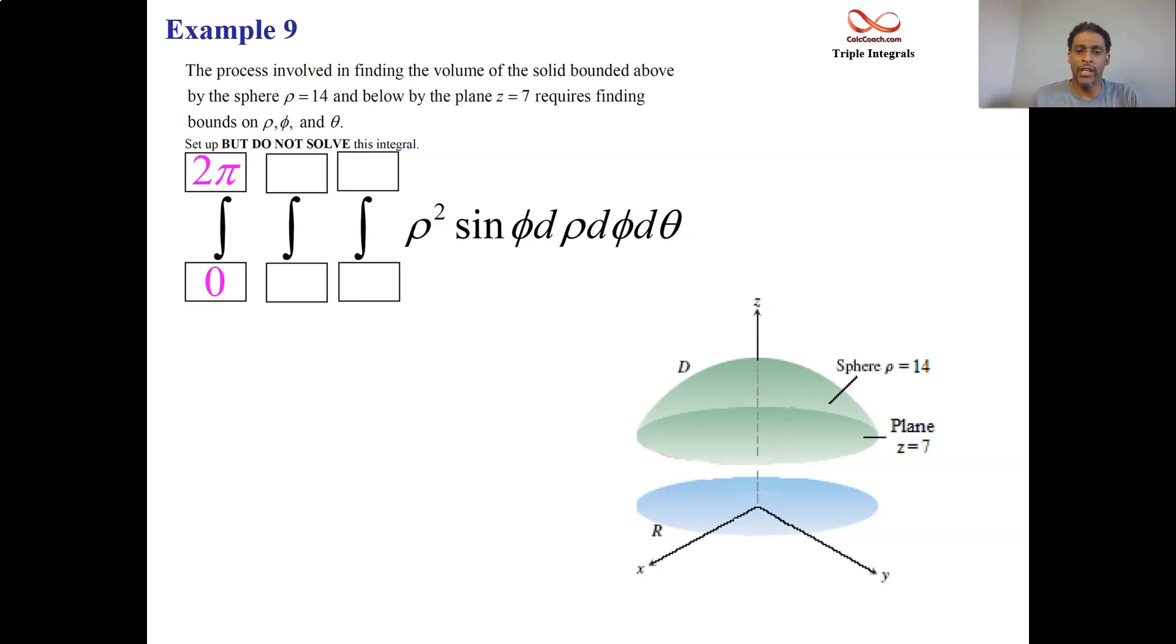What about rho? To get rho, you come radially outward from the origin. So we draw this and we see these two circles here representing the lower bound on rho and the upper bound on rho. So the upper bound on rho is a sphere where rho is a constant, that's rho equals 14, given in the problem there.